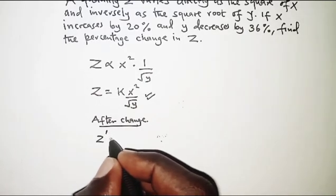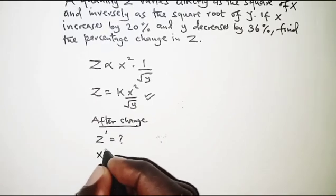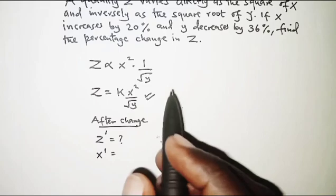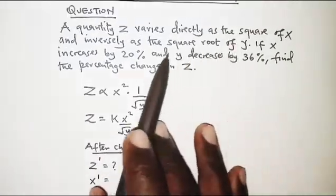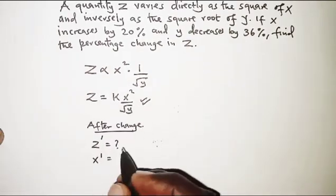So z prime is not yet known, but x prime we are told is, so x is increased by 20%, so that is 120 over 100 of x, and that is 1.2x.